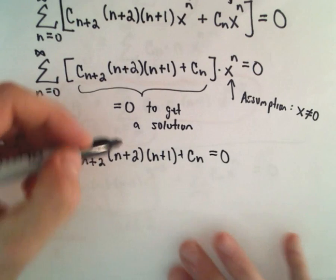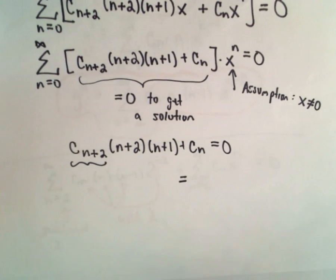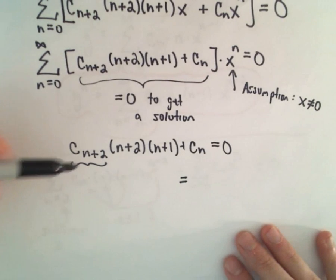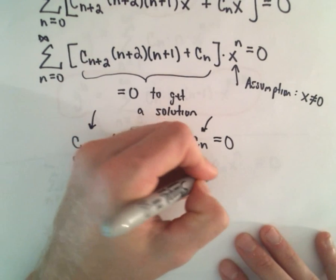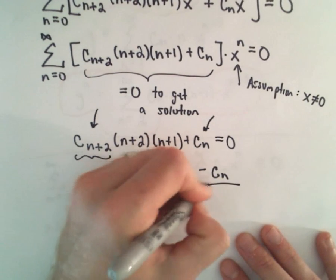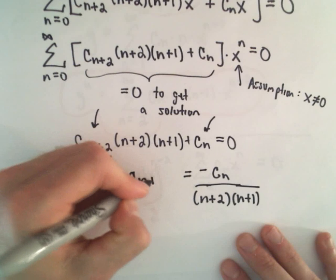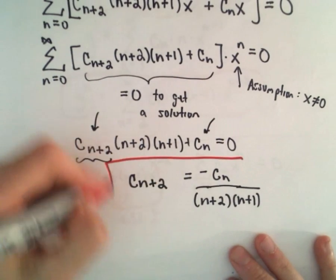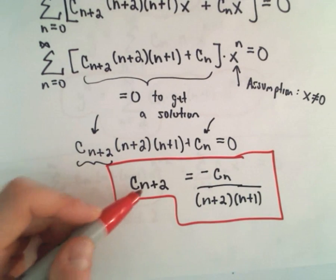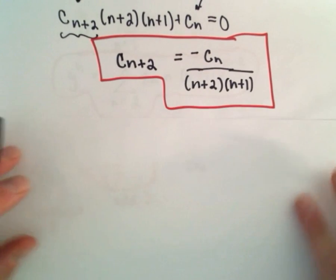Now I'm going to solve for c sub n plus 2. The goal is to find a nice way to express all these c sub n values. Subtracting c sub n and dividing by n plus 2 times n plus 1, we get c sub n plus 2 equals negative c sub n over n plus 2 times n plus 1. I'll substitute in values of n to spot a pattern.